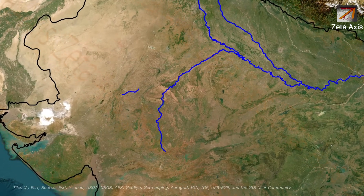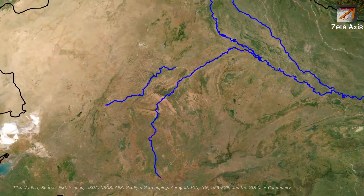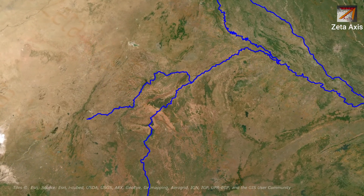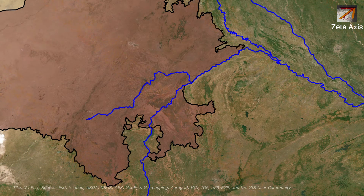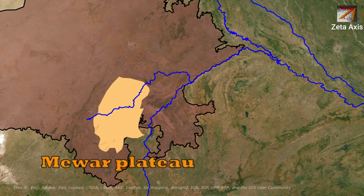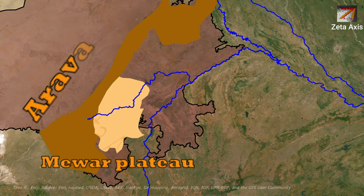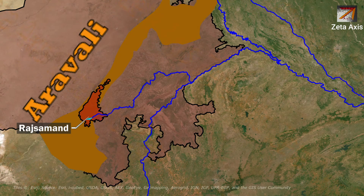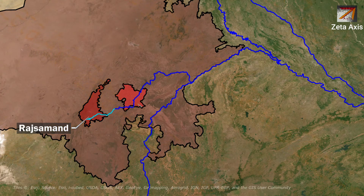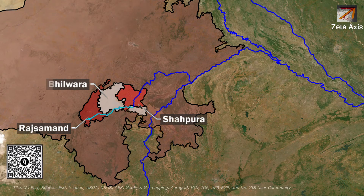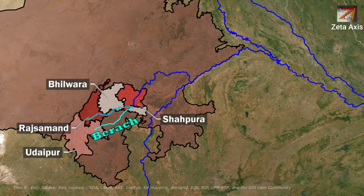Now let's discuss the Banas river, which is a tributary of the Chambal river. The Banas river flows entirely in Rajasthan and drains the Mewar region. It originates on the eastern slopes of the Aravalli range in Rajsamand district of Rajasthan. The Banas river passes through Shahpura district and Bhilwara district. In Bhilwara district, the Berach river meets the Banas river. The Berach river originates in the hills of Udaipur district, northeast of Udaipur, and joins the Banas near Bhilwara.